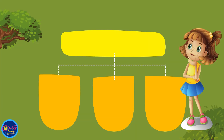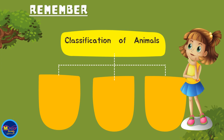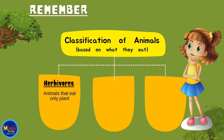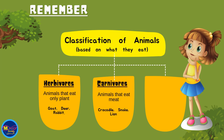Remember: Classification of animals based on what they eat. Herbivores are animals that eat only plants — examples: goat, deer, rabbit. Carnivores are animals that eat meat — examples: crocodile, snake, lion. Omnivores are animals that eat both plants and meat — examples: bear, chicken, pig.